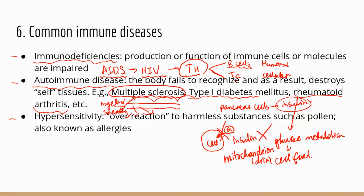Rheumatoid arthritis is another autoimmune disease where the joint tissues are attacked by the immune system. The third condition is hypersensitivity — hyper means high, so the immune system is overreacting. Your body is exposed to harmless substances, and normally a healthy person's immune system recognizes these as harmless and doesn't mount an aggressive response. But for people with hypersensitivity, their immune system overreacts to substances such as pollen or animal dander — things that are not going to make you sick. This condition is also known as allergies.